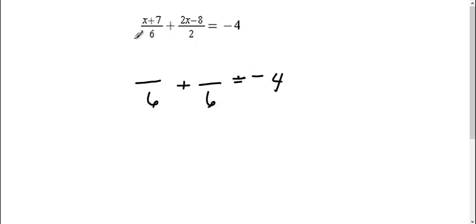Okay, so in this first fraction here, it already had the 6, so I don't need to do anything to the top. So it's still x plus 7. This one had a 2. So 2 times 3 gave me 6, so I need to multiply this top by 3.